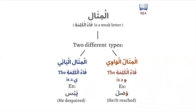If the fa-kalima has a waw, it's going to be called mithal al-wawi. Mithal al-wawi is if the fa-kalima is a waw, like wasala, which means 'he or it reached.' Wasala is mithal because it has a weak letter on the fa-kalima, and more specifically it is mithal al-wawi because that weak letter is a waw. So that is the distinction between mithal al-ya'i and mithal al-wawi, and this is important as we'll cover in a moment.